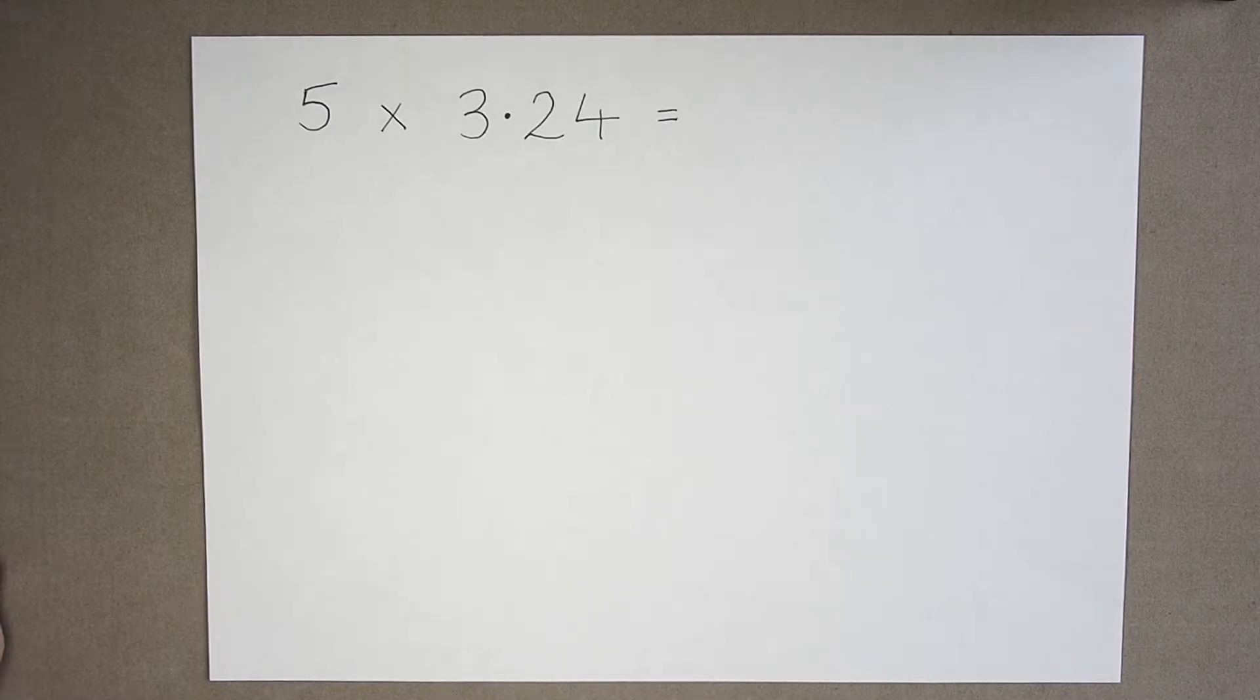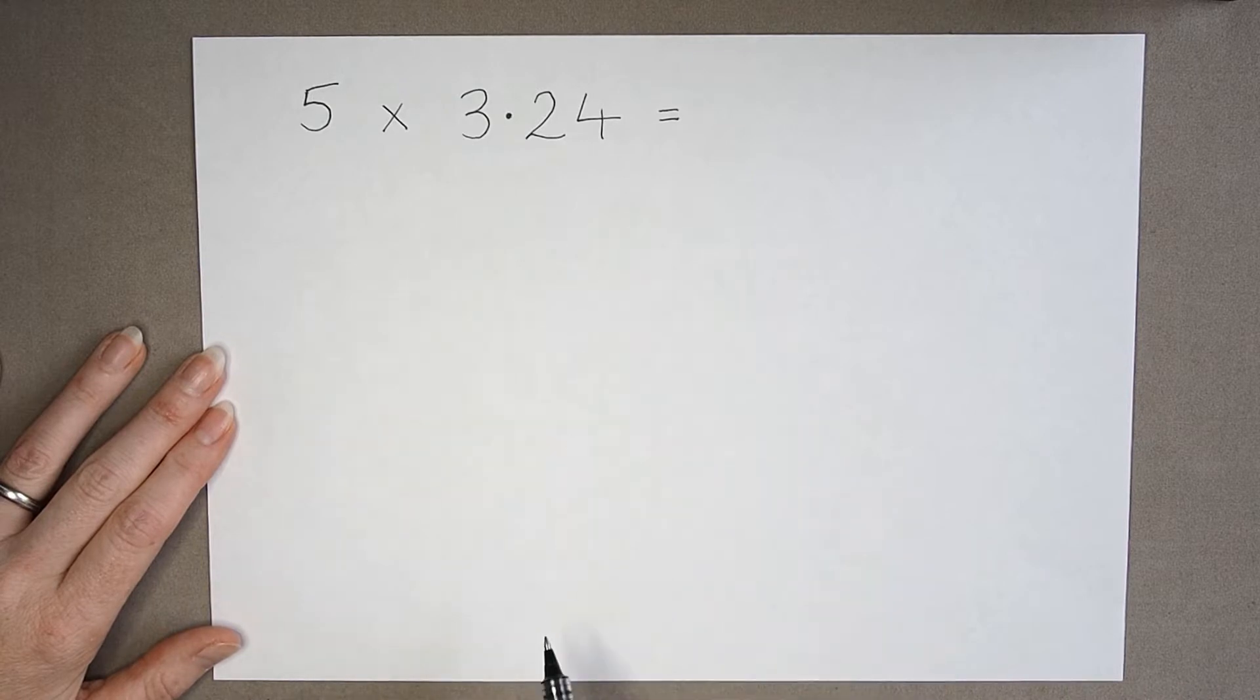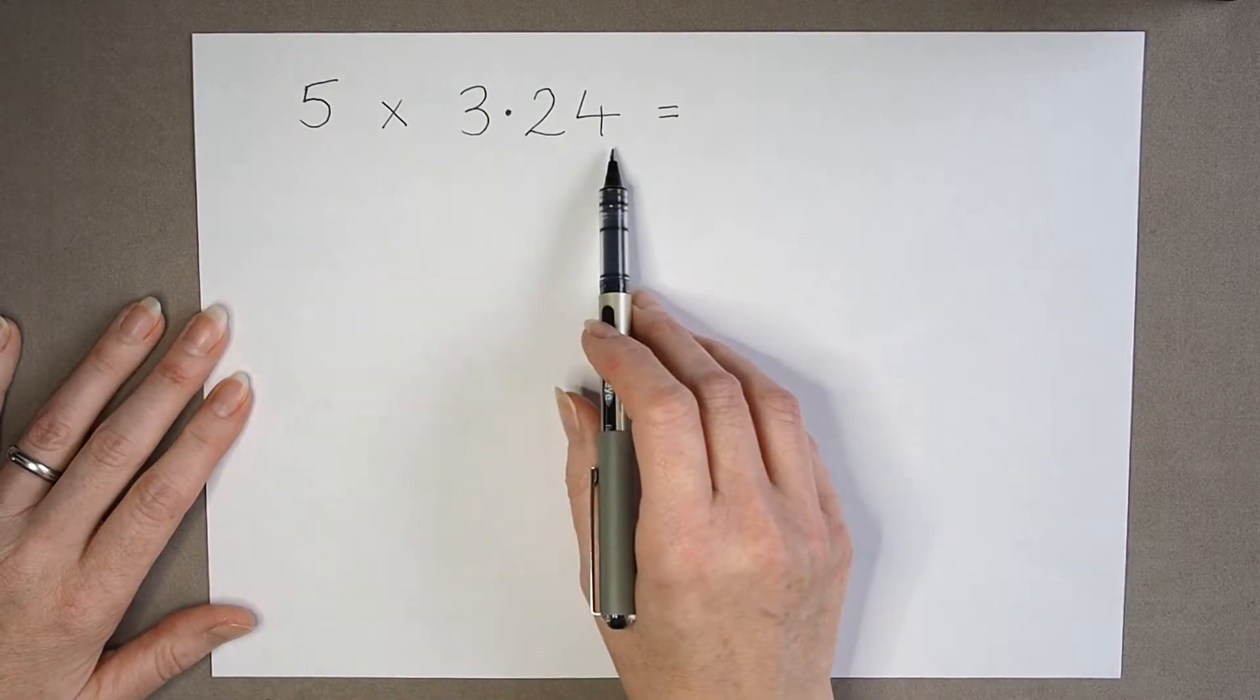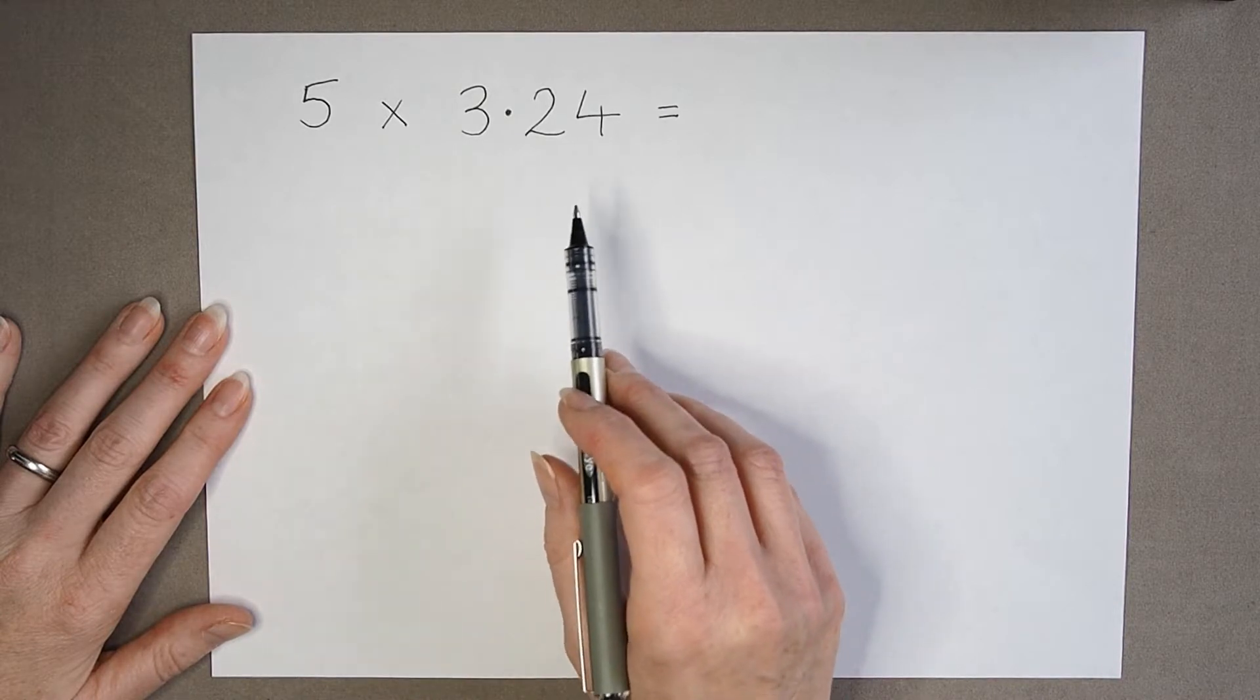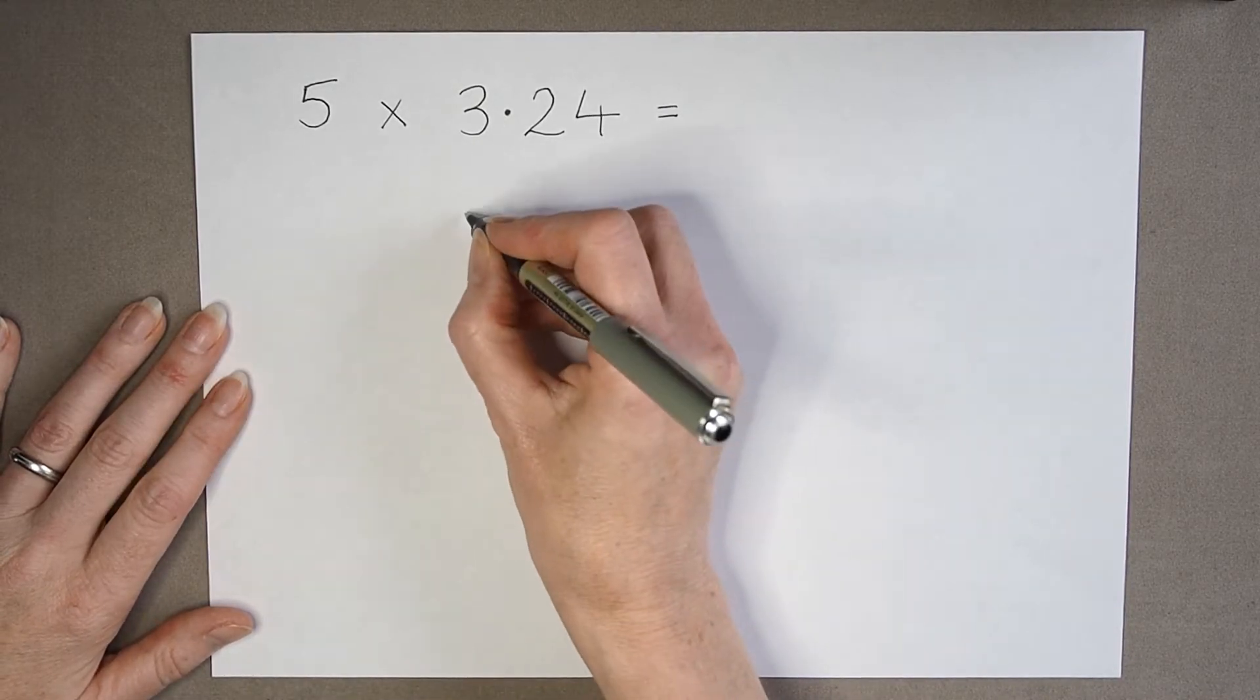So let's try another calculation involving decimals. 5 multiplied by 3.24. So again, I'm going to look at the longest number. Not necessarily the largest number, but the longest, the one with the most digits, to write down first.